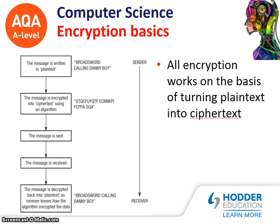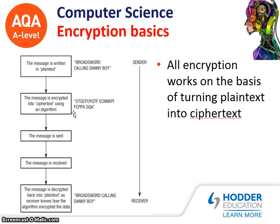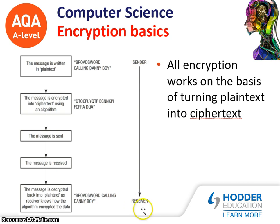The basics of encryption really work on the idea that plain text is turned into cipher text. A message could be written in plain text, such as 'Broadsword calling Danny Boy', and that message is encrypted into cipher text using an algorithm. The message is then sent, received, and decrypted back into plain text, as the receiver knows how the algorithm that encrypted the data works. This is about the process between the sender and the receiver.